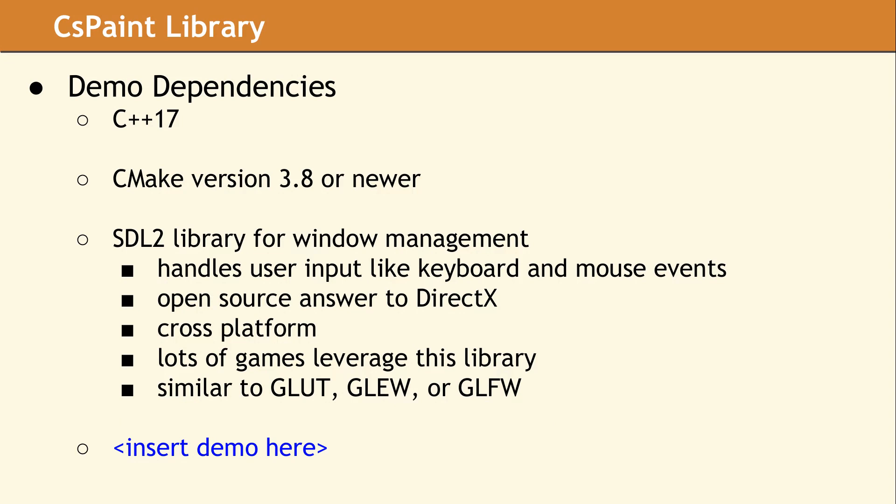In the demo we are about to show, there are 3D models, 3D text, and a chalkboard, which is intended to represent what text will look like in a GUI application. This demo requires C++17 and CMake 3.8 to build. It uses SDL2, which is an open-source library for handling tasks such as creating a main window, displaying it, and processing keyboard or mouse events. Users of OpenGL may be familiar with GLUT, which serves a similar purpose as SDL2.